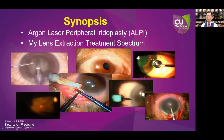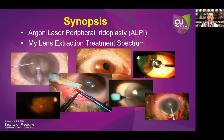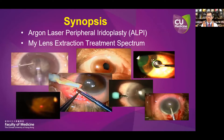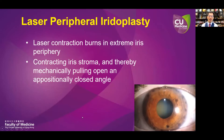In the rest of this talk, in the interest of time, I'll focus on two particular treatment modalities commonly used in primary angle closure disease: argon laser peripheral iridoplasty, mainly targeting plateau iris syndrome, as well as a lens extraction treatment spectrum, which involves lens extraction together with other IOP-lowering procedures for primary angle closure disease. Let us start with argon laser peripheral iridoplasty.